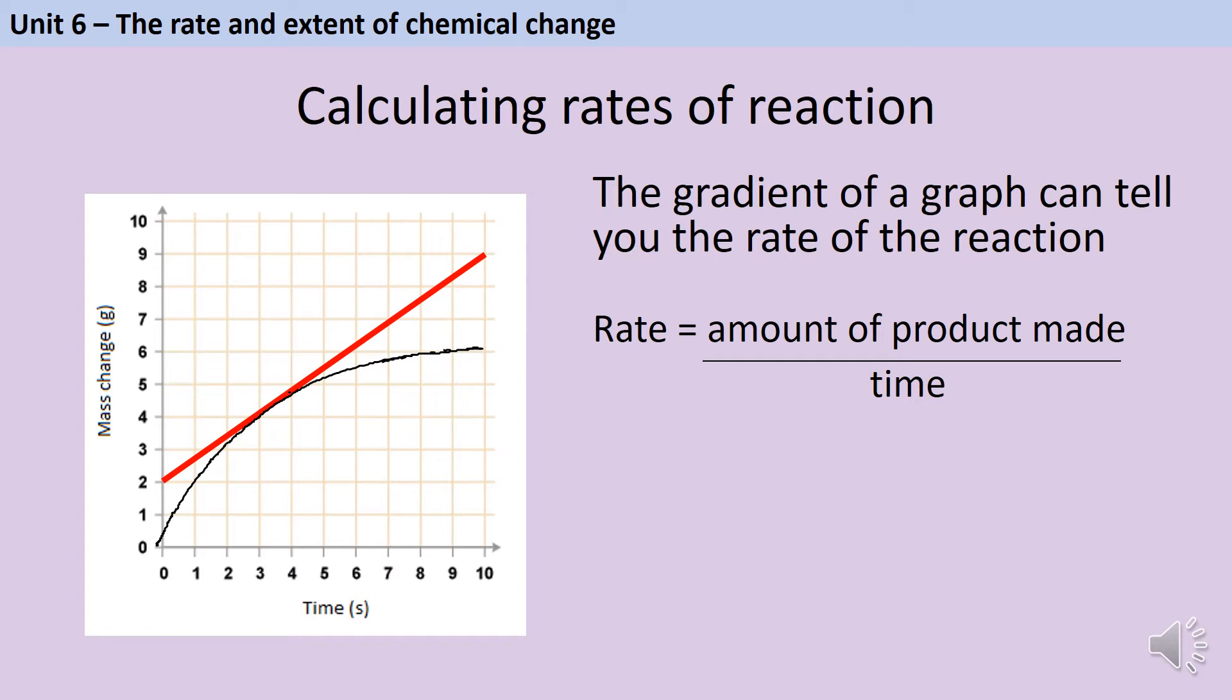Here my line's going up from 2 grams to 9 grams, so that's a change of 7, and that's taken 10 seconds to happen. So 7 grams divided by 10 seconds gives me a rate of 0.7 grams per second. You could be asked to describe that process of how you draw a tangent, or you could be asked to actually do it.